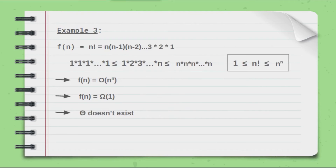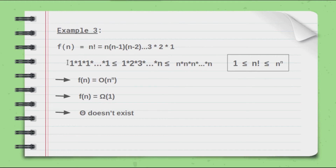Let's take another example. Assume f(n) = n!, which equals n × (n−1) × (n−2) × ... × 2 × 1. For the factorial, we can bound it from below using 1×1×1×...×1, and from above using n×n×n×...×n. So on one side we get 1 and on the other side we get n^n.